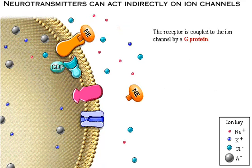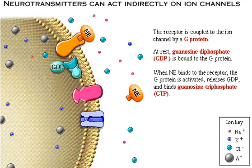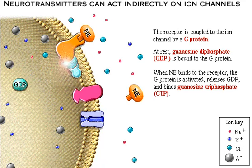The receptor is coupled to the ion channel by a G-protein. At rest, guanosine diphosphate, or GDP, is bound to the G-protein. When norepinephrine binds to the receptor, the G-protein is activated, releases GDP, and binds guanosine triphosphate, or GTP. GTP is a high-energy molecule.